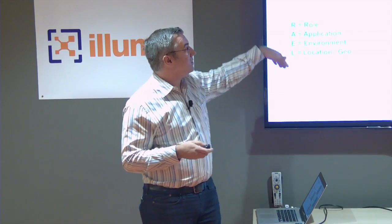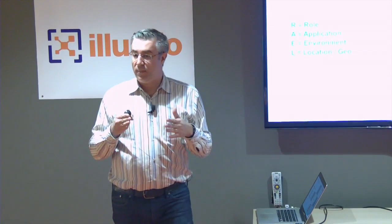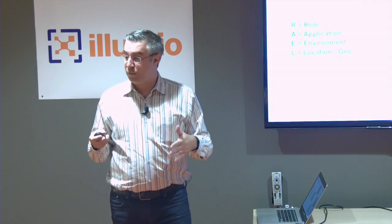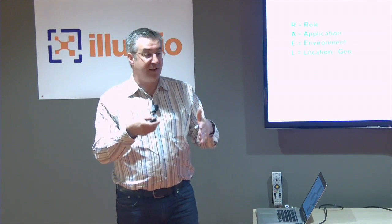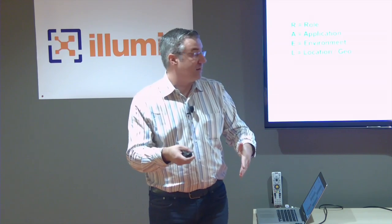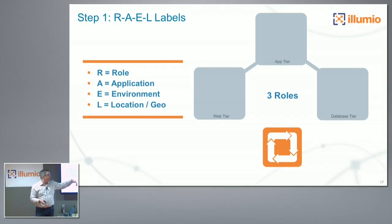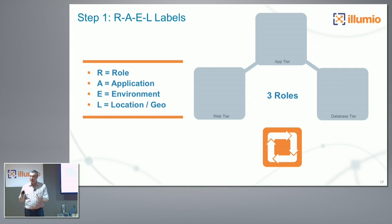The model starts with a Role. A role is a part of an application — what role the application plays. For example, a web tier, app tier, or a database tier. None of these things are hard-coded in our system; they're whatever is appropriate for the customer and the customer's deployment.